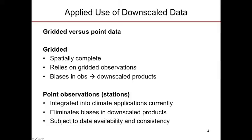The other alternative is to use point observations. Downscaling to point observations or stations may be useful if current applications are employing a station-based approach. There may be biases in trying to relate gridded data to station data, so if we can downscale directly to stations, we can eliminate that step. With statistical downscaling, data availability, longevity, and consistency are important — station-based data may actually be preferable, though changes in how data was recorded through time can severely limit these statistics.